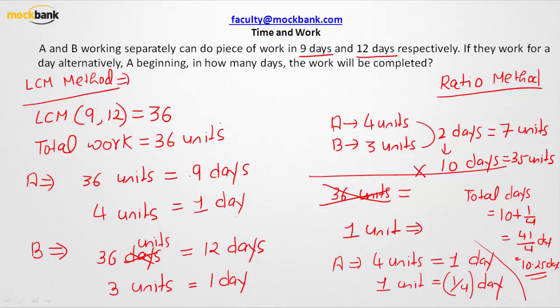Now only 1 unit of work is left, and on the 11th day A is going to come to work. Since A in a day finishes 4 units of work, he would take only one-fourth of the day to finish 1 unit of work. That is how we are getting that this work will get completed by A and B in 10.25 days. I hope you are getting this logic.